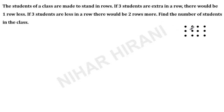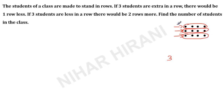I will explain this with a small example. Let us say I have 3 rows — row 1, row 2, and row 3. Each row has 4 students. To find the total number of students, we multiply number of rows times number of students in each row, which makes 12. This simple example will help you understand this question.